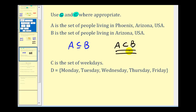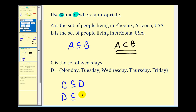Looking at our second example, C is the set of weekdays and D is the set {Monday, Tuesday, Wednesday, Thursday, Friday}. These two sets are actually equal to each other. So we could say that C is a subset of D, and D is also a subset of C. But since they are equal, we cannot use the proper subset notation. So the subset notation would be the best to use in this situation.